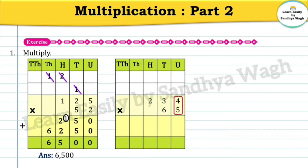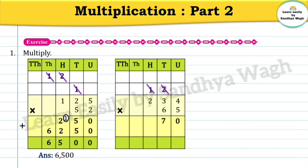Now let's multiply 234 by 65. Five fours are twenty, so we will write zero and two will go as a carry over. Five threes are fifteen, fifteen plus two is seventeen, so we will write 7 in the tens place and 1 will go as a carry over. Five twos are ten, ten plus this one is eleven. Now let's write zero and six fours are twenty-four, so we will write 4 in the tens place and 2 will go as a carry over.